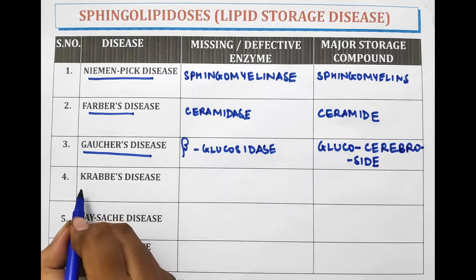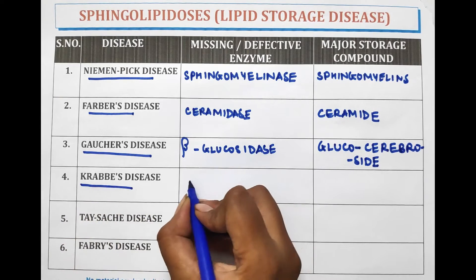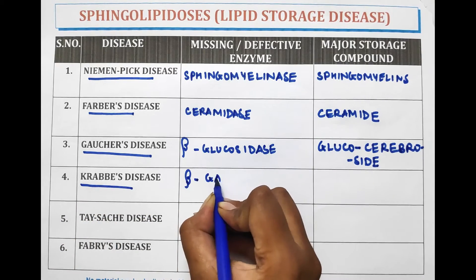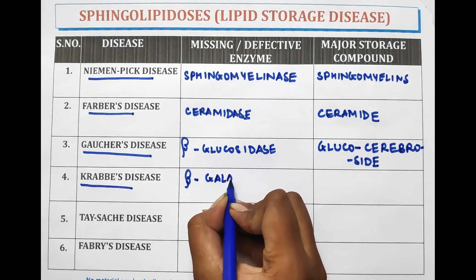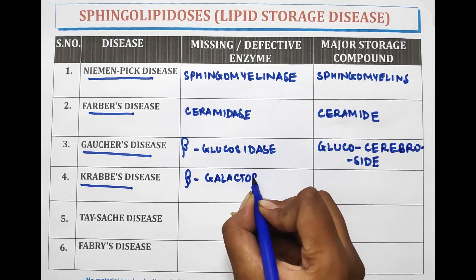The next disease is Krabbe's disease. The enzyme responsible for this is Beta-Galactosidase.